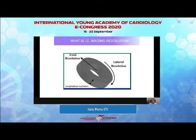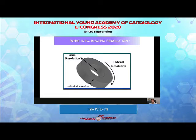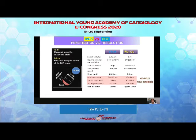What is resolution? We are talking about tomographic images — slices. We have three axes: longitudinal resolution, meaning how many slices we have per millimeter; axial resolution along the scan line; and lateral resolution between each scan line. For IVUS we are talking about hundreds of microns, while for OCT we are talking about tens of microns.